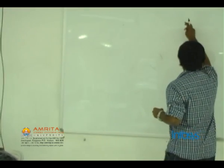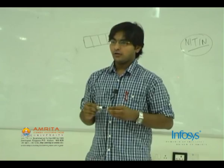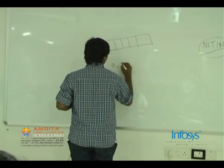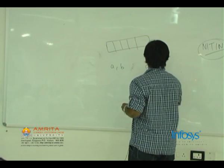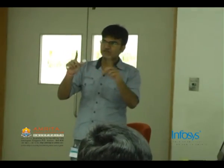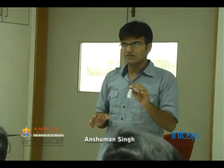This problem is from ICBC Regionals Amritapuri last year. There is an array of numbers and you need to find a pair A and B such that A XOR B is maximum. There are n² pairs so you can brute-force, but you have to come up with something better than O(n²). Take some time, think about it, and propose a solution.